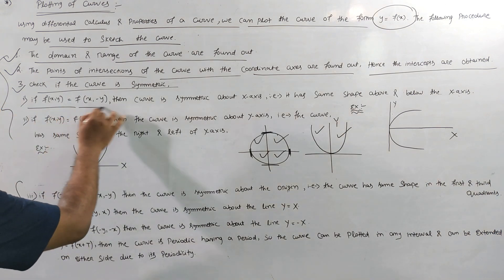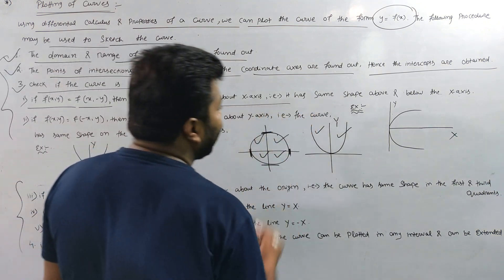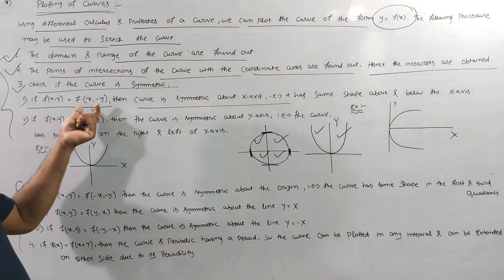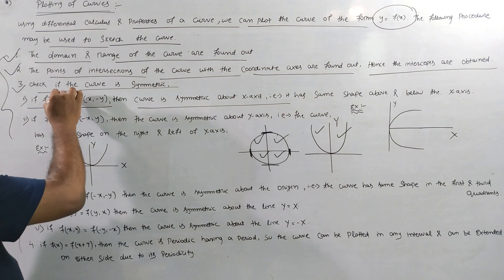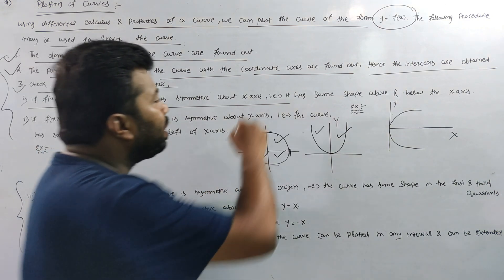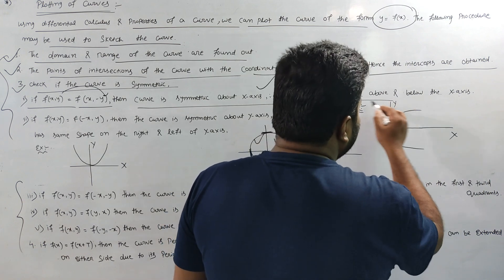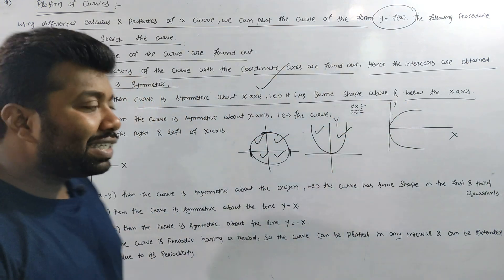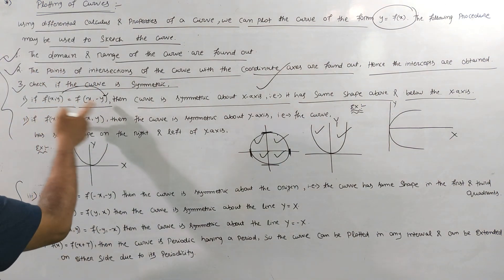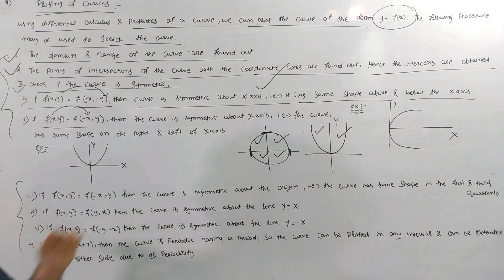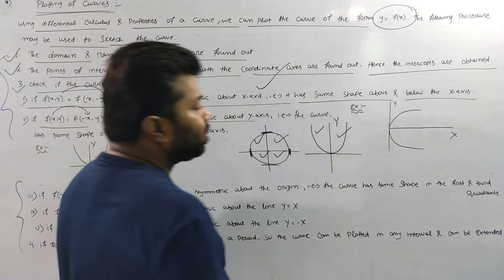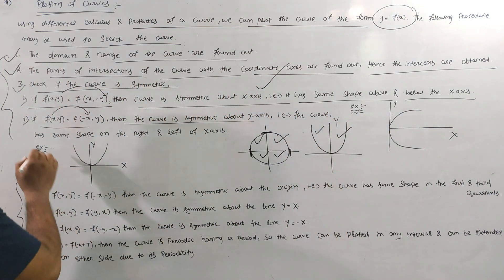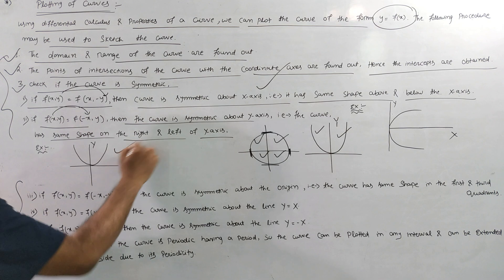If f(x, y) = f(x, -y), then the curve is symmetrical about the x-axis — we can see the shape of the curve above and below the x-axis is the same. Then the curve is symmetrical about the y-axis if it has the same shape on the left and right side.